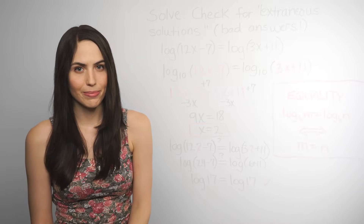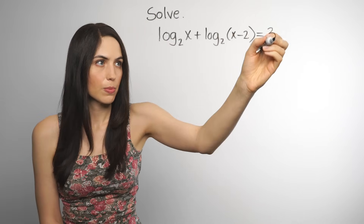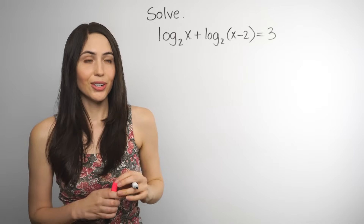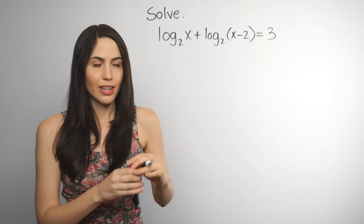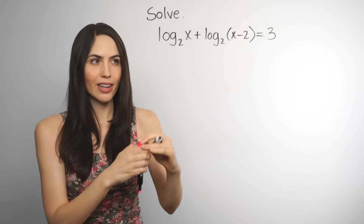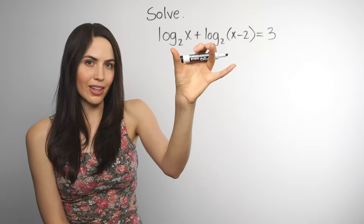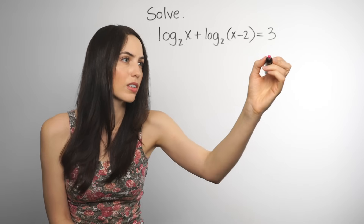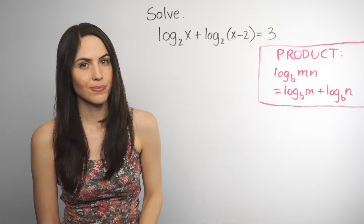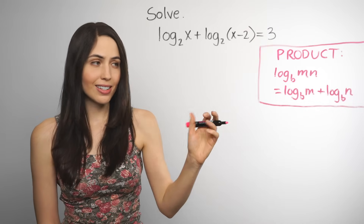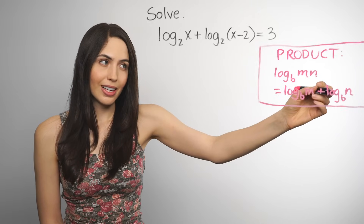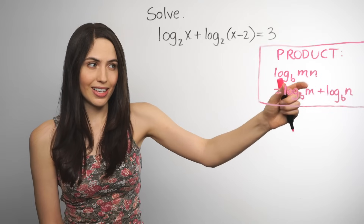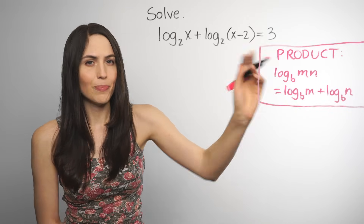Now let me show you the product property. What if you have 2 logs on one side of the equation and just a number on the other? A lot of the work of these equations is taking multiple logs and combining them into one. With something like this, 2 logs added together ends up being the same as 1 log of a product. The product property says that the sum of 2 logs is the log of a product — addition outside 2 logs is the same thing as multiplication inside a log.